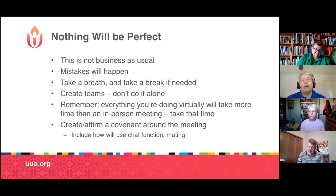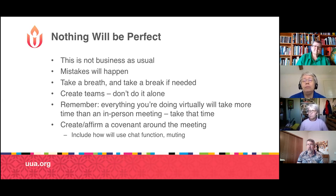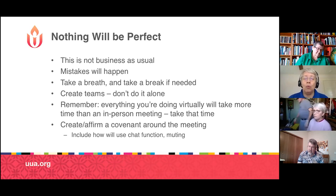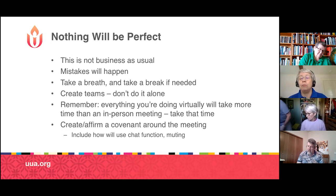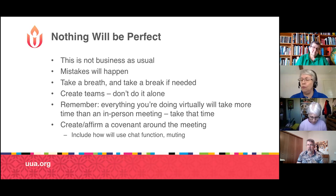We were very well served at our regional assembly by creating a covenant around the meeting about what kind of behavior would be acceptable and what would not be. In this meeting, I only have you able to chat to me or the other co-hosts. We had very explicit comments about needing to be kind to each other, and an explicit warning that if people were to misbehave they would be kicked out of the meeting and not let back in. Creating a covenant, or building on your own congregational covenant as the meeting begins, will be really helpful.